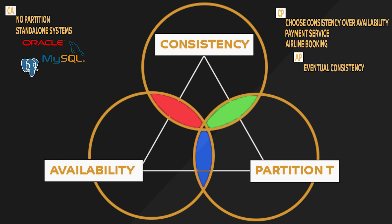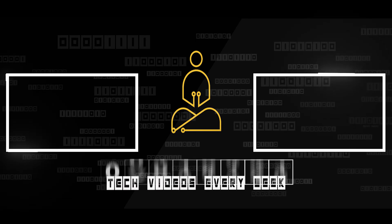AP model is basically eventual consistency. You return the most recent version of the data you have, which could be stale. The system will also accept writes that can be processed later when the partition is resolved. You choose availability over consistency when your business requirements allow for some flexibility around when the data in the system synchronizes. Availability is definitely a compelling option when the system needs to continue to function in spite of any external errors. For example, shopping carts. Any marketplace, be it Amazon or Walmart, they don't want any of their customers to experience any kind of friction while shopping. Even if the data in the shopping cart is stale, it will be eventually consistent.